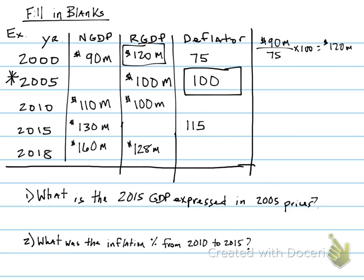Next open box: we need to find the nominal GDP for the year 2005. We should be able to figure this out just by understanding what nominal and real are and understanding the base year. If my deflator is always 100 in the base year, my nominal and real values will always be the same in the base year because we're using the same prices for that year. So if my real is $100 million, in the base year my nominal will also be $100 million.